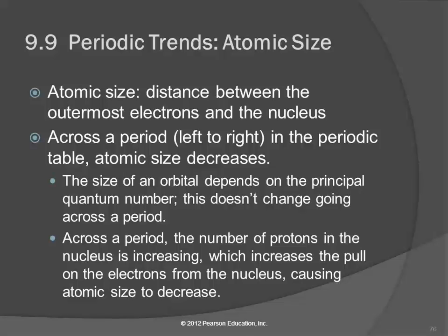Periodic trends - there are some trends in the periodic table. One of them is atomic size. How do you define atomic size? There's different ways to define it, but basically it's the distance between the outermost electrons and the nucleus.